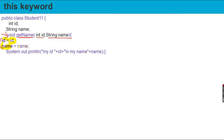We have name assignment. We can do the same — 'this.name'. It creates an ambiguity. The variable is called the same name as the class variable. The instance variable is declared as int and string name.